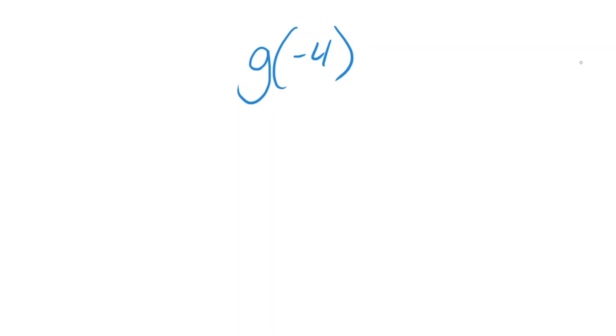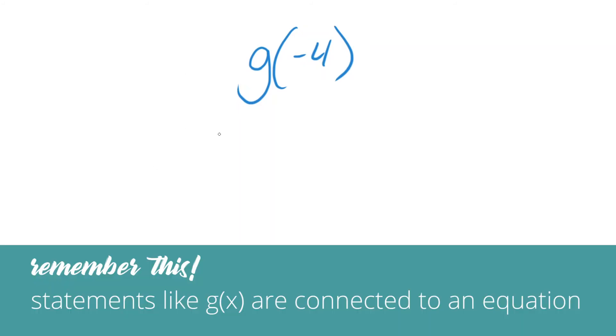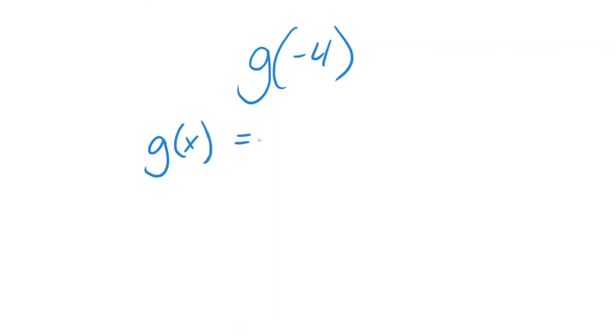A statement like this is usually connected to an equation, since the number in the parentheses is what we would replace x with. In this problem, the equation that g(-4) is connected to is gx equals ax squared plus 24.